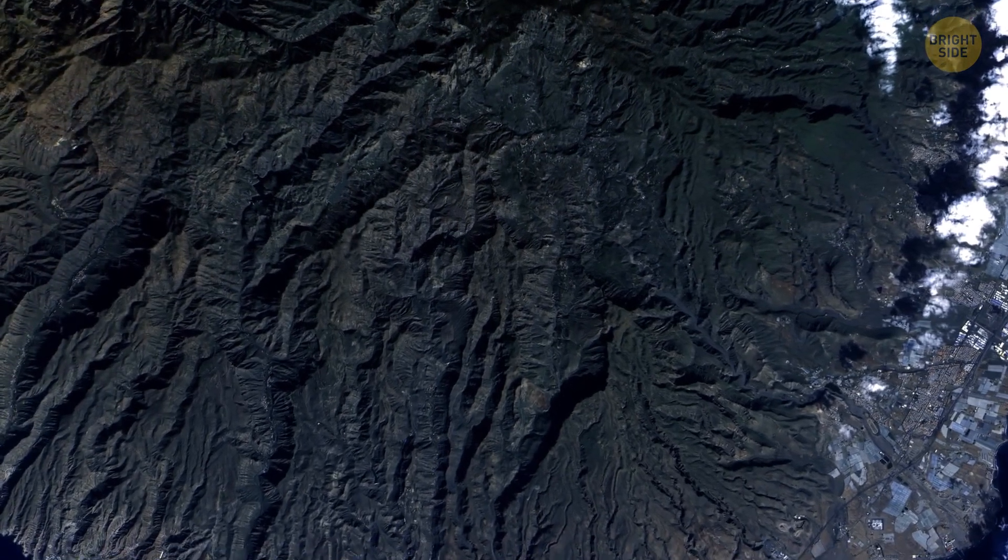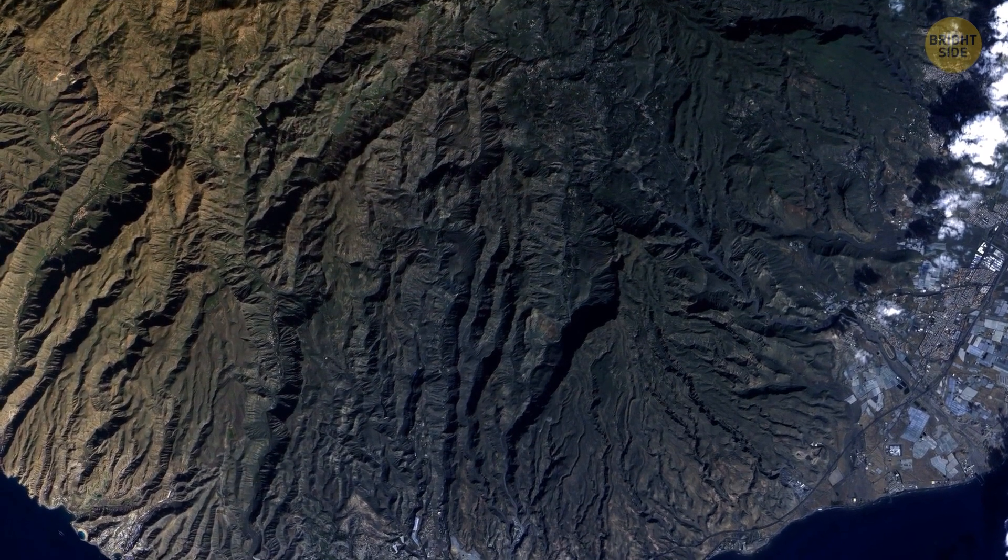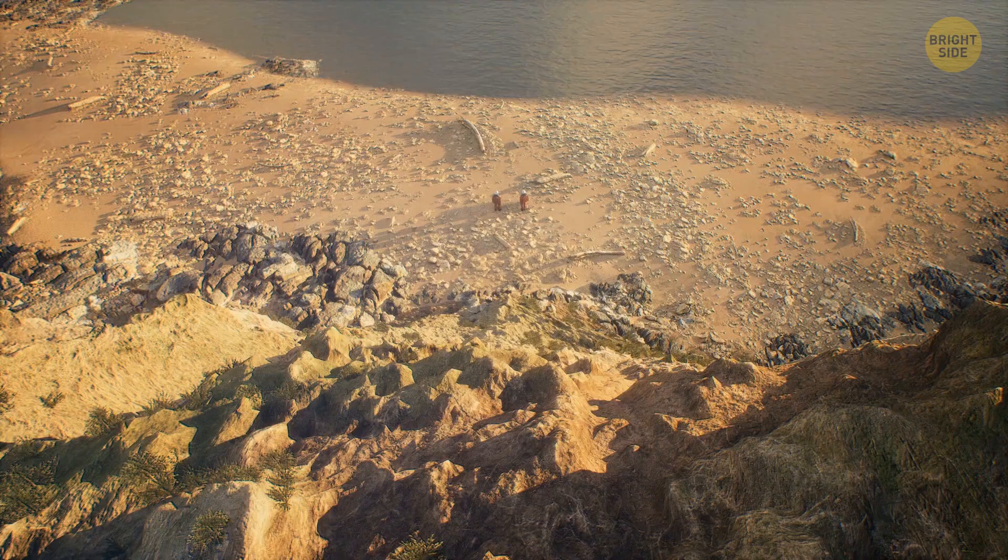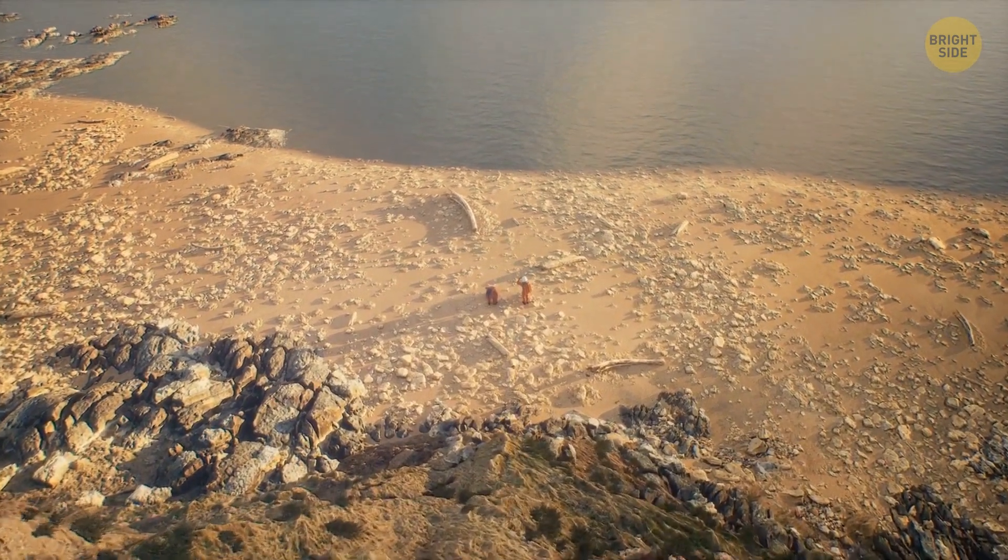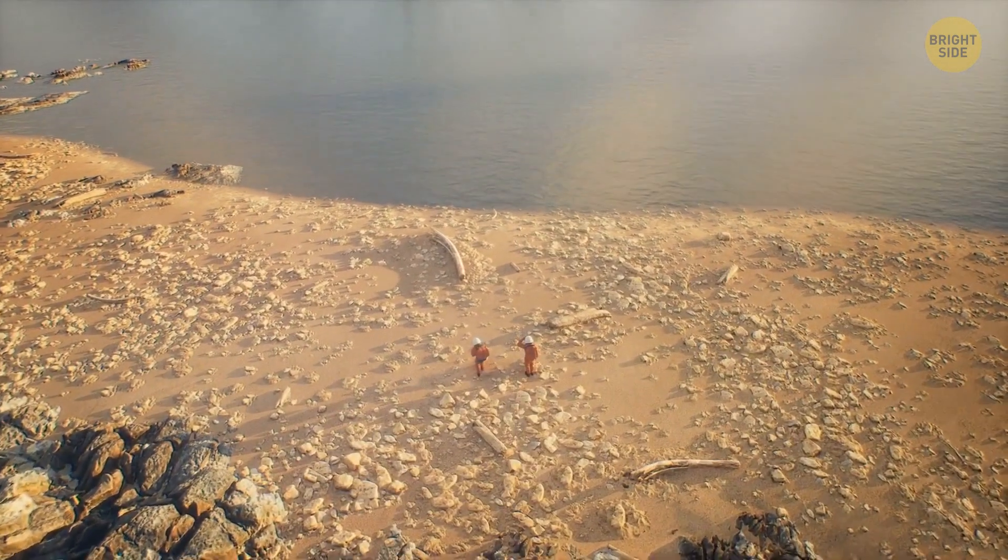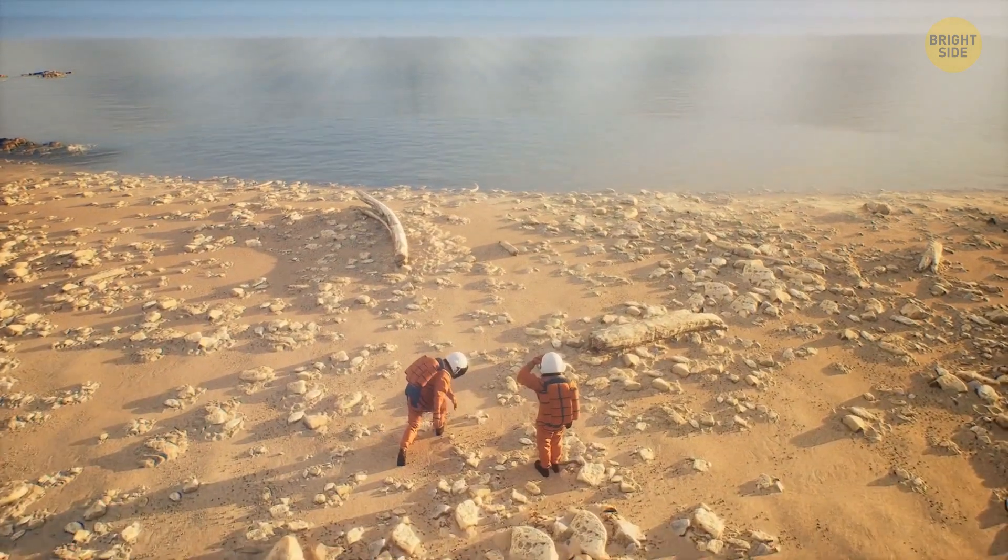In some of the simulations, Venus had a similar landscape to what it has now, with a shallow ocean and some water trapped in the soil. In others, they imagined Venus having a deep ocean or even the entire surface covered in water. Surprisingly, in all these scenarios, Venus could have maintained temperatures suitable for liquid water.